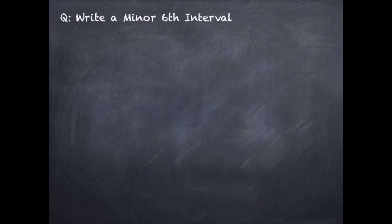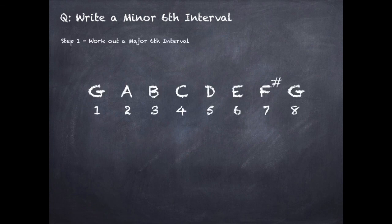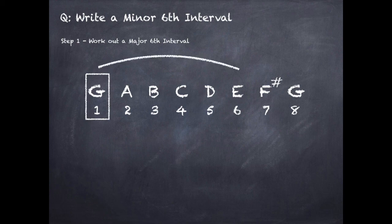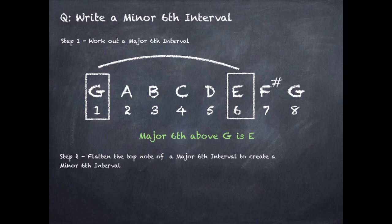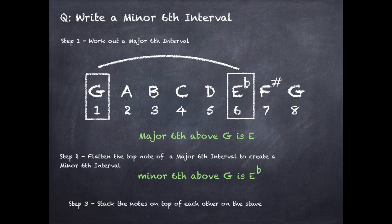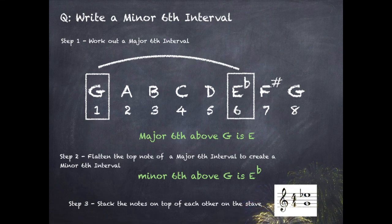To write a minor sixth interval: step one, work out the major sixth — from G to E. Step two, flatten the top note: E becomes E flat, so a minor sixth above G is E flat. Step three, stack the notes on the stave.